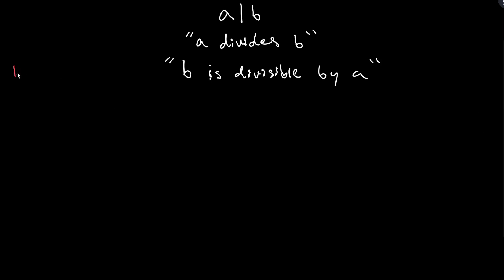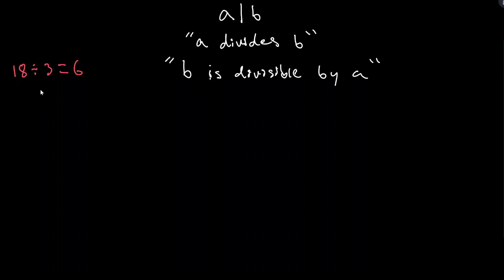For example, 18 is divisible by 3. We often think about it using division: 18 divided by 3 gives a whole number with no remainder — 3 goes into 18. That's a perfectly fine way to think about it. However, when writing formal proofs, we tend to prefer multiplication. Instead of saying 18 is divisible by 3 because 18 divided by 3 is 6, we say 18 is divisible by 3 because we can multiply 3 by an integer to get 18.